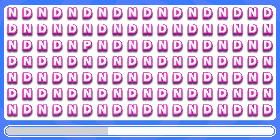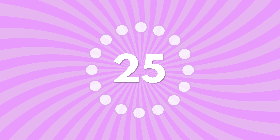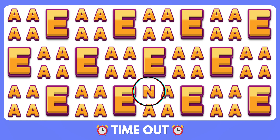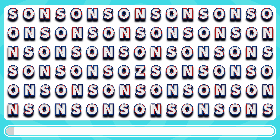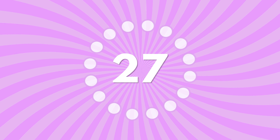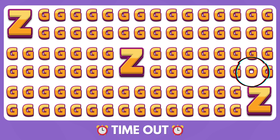Find the odd letter P. Here it is, hope you found it. A letter is placed instead of letter A. Can you see it? The letter N is placed instead of A. Identify the odd letter Z. The odd letter Z is right there. Which letter stands out from the rest? Here is the letter O instead of letter G.